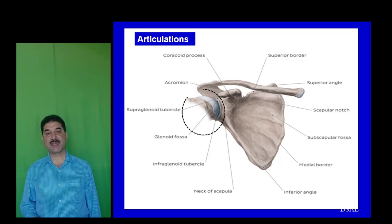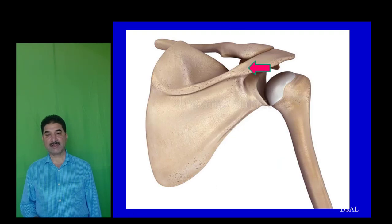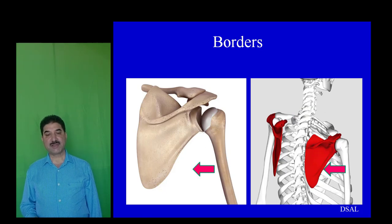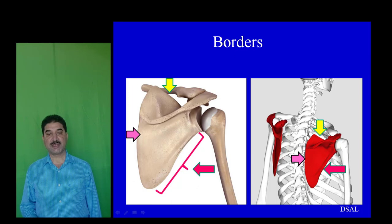The articulations of the scapula are: with the upper end of the humerus to form the shoulder joint, and with the lateral end of the clavicle to form the acromioclavicular joint. The scapula has a lateral border which is thickened, a medial border which faces the spine and is thin, and a superior border which lies between the lateral and superior angles.